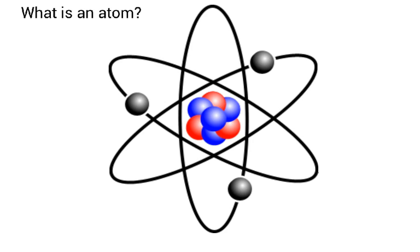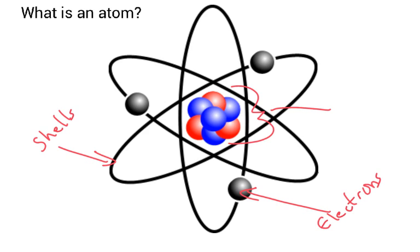And an atom, we've kind of got a model of an atom here. We've got electrons and they orbit in shells. Here we've got the nucleus, and inside the nucleus, well the nucleus contains neutrons and also protons.